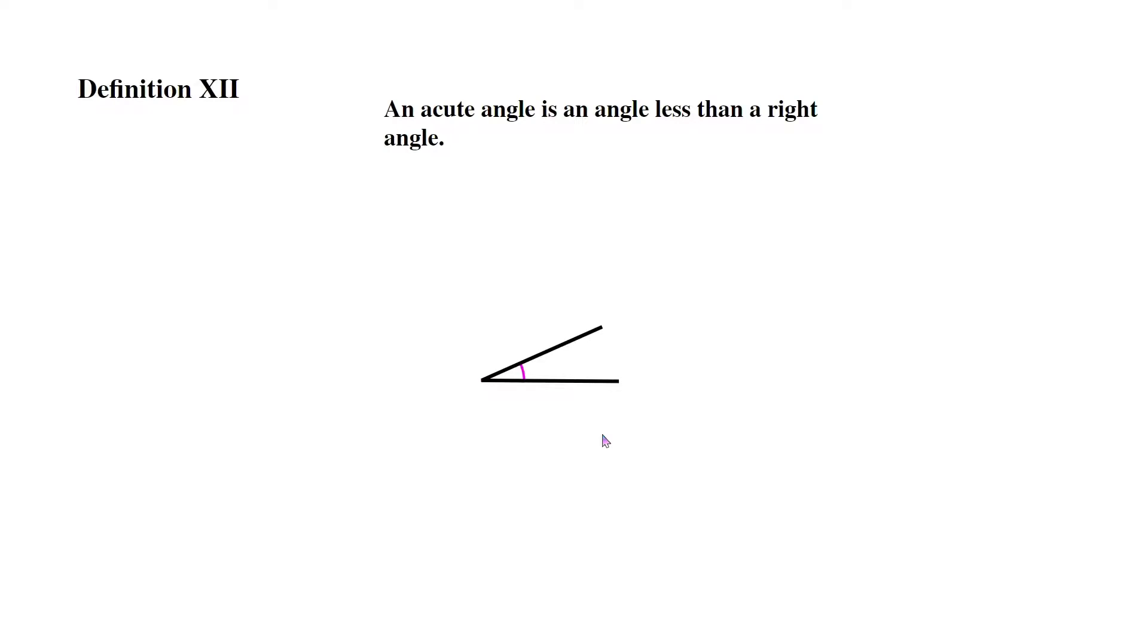Definition 12. An acute angle is an angle less than a right angle. So any angle less than 90 degrees, 60, 10, all those are all valid acute angles.